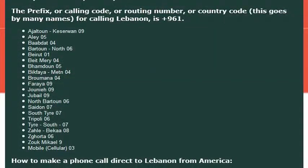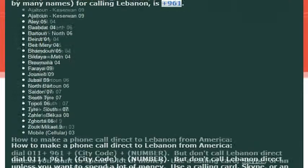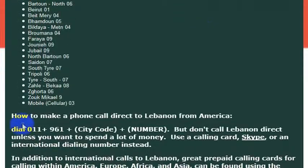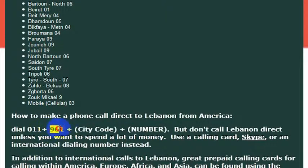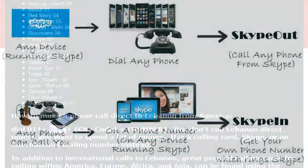When I'm ready to call there, I'm going to want to know how to make an international call to the country, which means I need to know the country code. 9-6-1 is the international country code for dialing Lebanon. So in order to make a phone call to the country, I would dial 0-1-1, then 9-6-1, which is the country code for Lebanon, then the phone number that I want to dial. The dialing code or the international country code for Lebanon is 9-6-1.